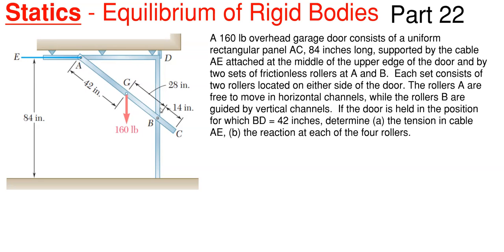Each set consists of two rollers located on each side of the door. The rollers A are free to move in the horizontal channels while B rollers at B are guided by the vertical channels. If the door is held in the position for which BD is 42 inches, we need to determine the tension in the cable and the reactions of the rollers.